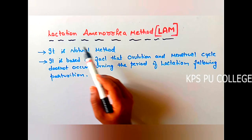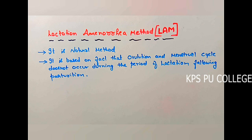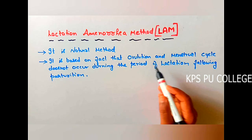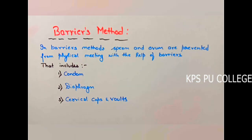The next important method is the lactation amenorrhea method (LAM). It is a natural method of contraception based on the fact that ovulation and the menstrual cycle do not occur during the period of intense lactation following parturition. During intense lactation, you cannot see ovulation or menstrual cycle. As long as the mother breastfeeds the child, there is no chance of conception. The disadvantage of this method is it is effective only for 6 months from the time of delivery, after which ovulation and menstrual cycle slowly begins.